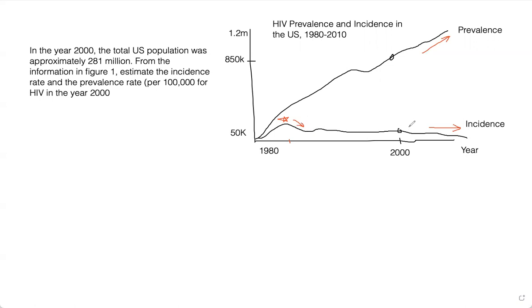But despite those cases plateauing on an annual basis in terms of incidents, you have an increased number of prevalence. That's because despite this steady rate of incidents per year, this is all contributing to the overall prevalence of the disease. So this question that was on the worksheet, number two, it said in the year 2000, so that's going to be right here in the year 2000, total U.S. population was approximately 281 million people. So 281 million people total. Let's just go 281M for million. So in this figure, estimate the incidence rate and the prevalence rate per 100,000 for HIV in the year 2000.